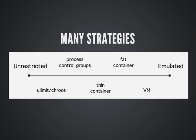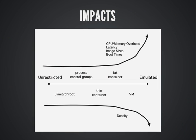You're actually simulating another type of CPU — or even the same type of CPU — on the same systems. As we go from left to right in this process — uLimits, process control groups — unrestricted systems don't impact your performance very much. But as you go further right, your CPU and memory overhead start to go up, your latency starts to go up, image sizes go up, and boot times go up.